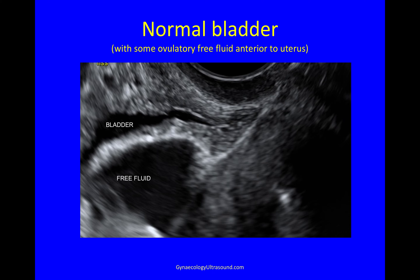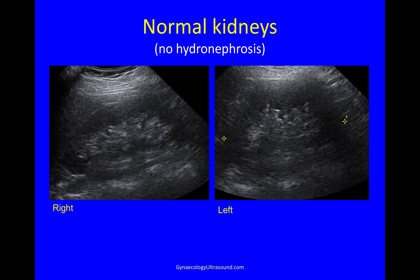And then don't forget to look at the bladder. Normally by the end of the scan the bladder has got some more urine in it. There's the urethra — you need to look at the bladder base, the dome, and the area where the ureter inserts. In this view there's some free fluid anterior to the uterus. It's not ascites — she's just ovulated, and we know that from the other findings. And then don't forget to look at the kidneys. This is done transabdominally — you're looking to see if there is any hydronephrosis.